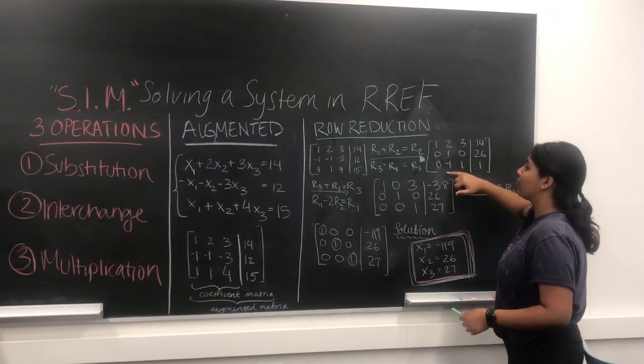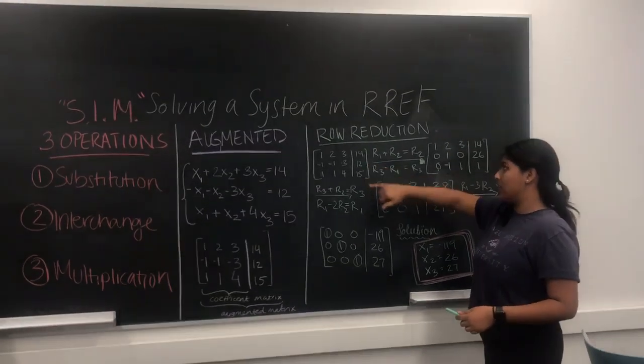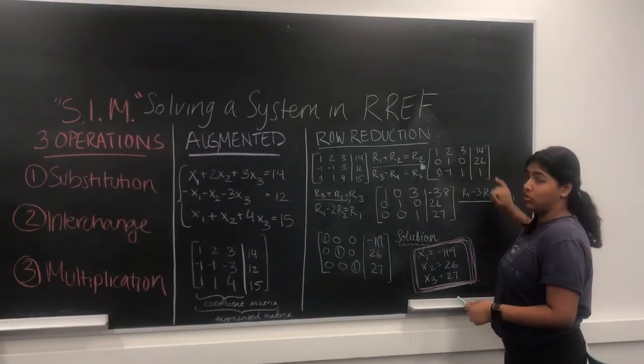And at the same time, we've also substituted row 3 for row 3 minus row 1, so that's where we get 0, 1, 1, and 1.